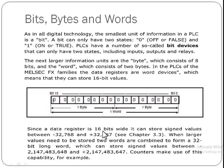Since a data register is 16 bits wide, it can store signed values between -32,768 and +32,767. A 16-bit register can store a value ranging from this range to this range.